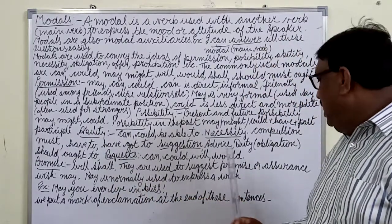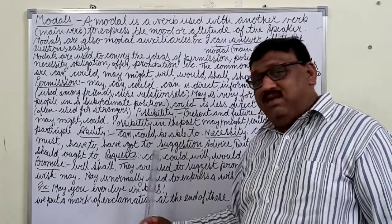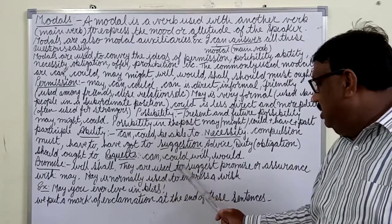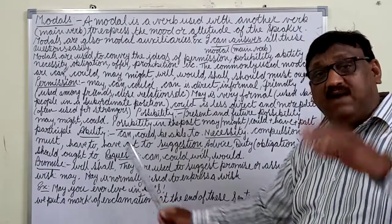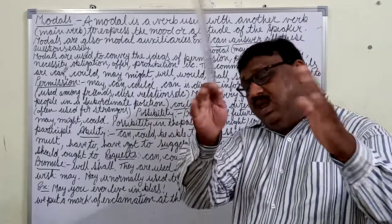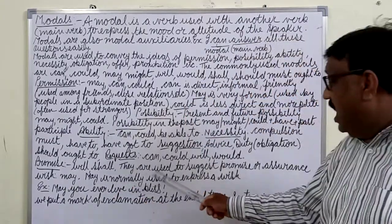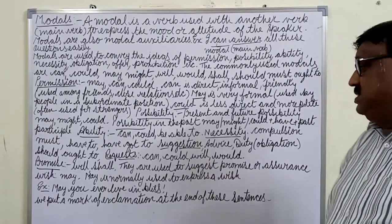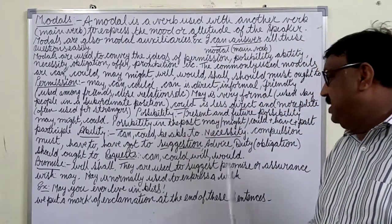For suggestions, advice, duty, and obligation, we use Should or Ought To. Whenever we have to show a request, we use Can, Could, Will, or Would. When we agree to a promise, keep in mind we use Will or Shall — they are used to suggest a promise or assurance.